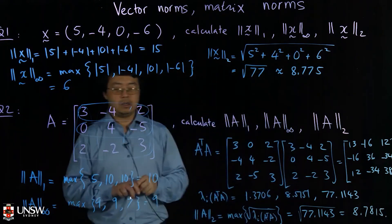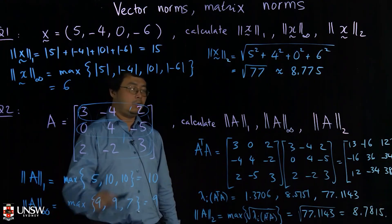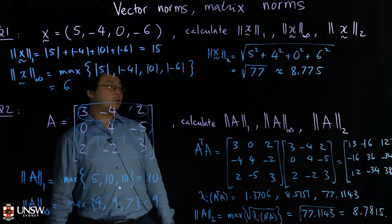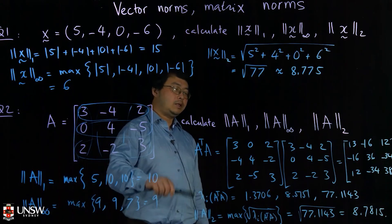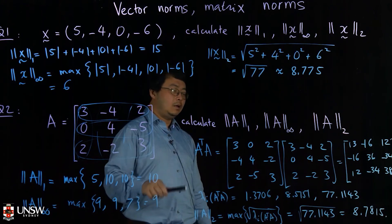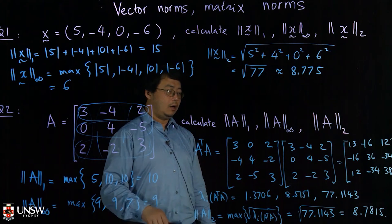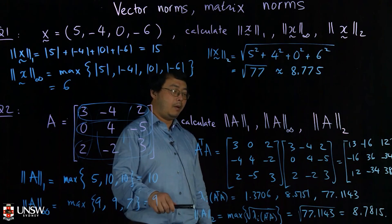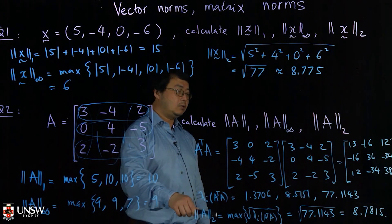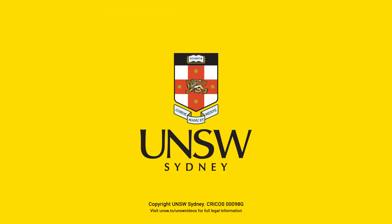So that is how you compute the one norm, the infinity norm, and the two norm of the matrix. For the two norm, there are three steps: first compute A transpose A, second find the eigenvalues of A^T A, and the last step is to take the max eigenvalue and take the square root. Thank you.